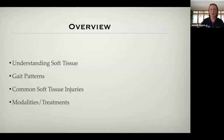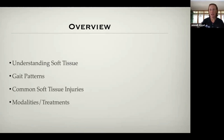To get started, what we're going to discuss today: first and foremost, we'll define what soft tissue actually is and the structures we're dealing with. We'll look at a couple of gait patterns to help understand what we're looking at when we watch a dog walk and trot, trying to determine lameness. Then we'll look at some of the soft tissue injuries that are commonly dealt with — not just with athletes, but pet dogs as well — how we deal with treatment and the different modalities we use.